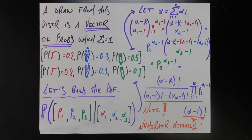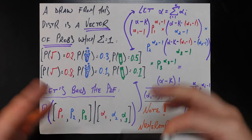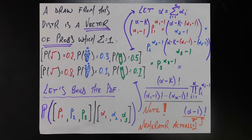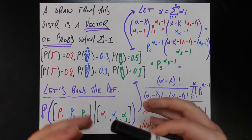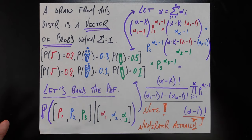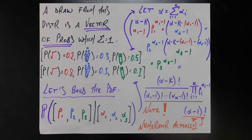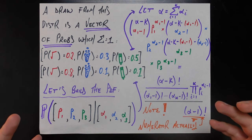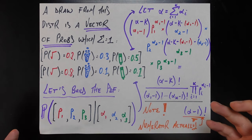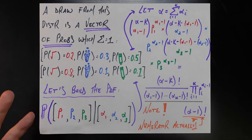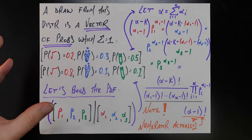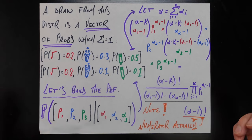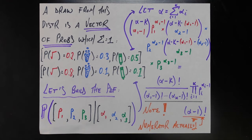How do we actually construct the probability density function from scratch, from the ground up? On this channel we like to build up formulas instead of starting from the formula and trying to break it down. So the question is: if I was trying to devise the formula for a Dirichlet distribution from scratch, now that I know what the goal of that distribution is, how would I devise that formula? The formula is going to capture the probability that our vector of probabilities equals certain values p1, p2, p3.